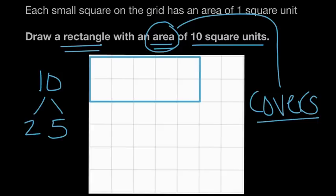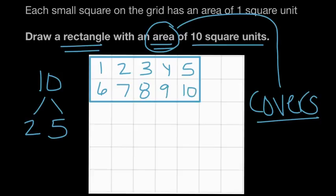This rectangle covers one, two, three, four, five — there's the first row of five — and the second row of five has unit squares six, seven, eight, nine, and ten. So here's one perfect answer: a rectangle with two rows of five square units. We could have drawn this rectangle anywhere on the grid — down here with two rows of five, or right here with two rows of five. Any rectangle covering two rows of five has an area of 10 unit squares.